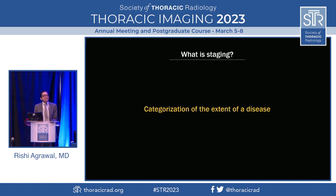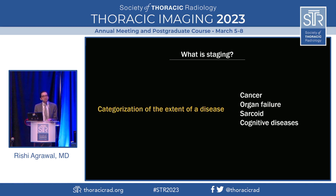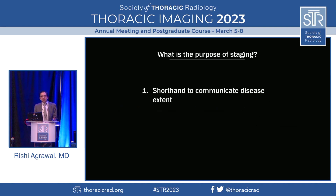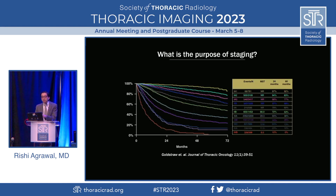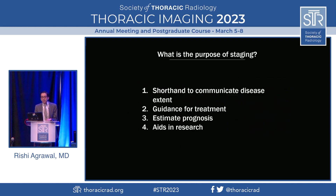Staging is a way to categorize the extent of disease. Probably the best known example is cancer, but there are staging systems for many other disease processes. The most important purpose for radiologists is that it's a shorthand way to communicate disease extent, helping us speak the same language as referring clinicians. Second, it guides treatment — it doesn't tell us everything, like cancer genetics, but it's a good starting point for whether surgery is indicated. Third, it estimates prognosis: survival curves for lung cancer show decreased survival with increased stage. Finally, it aids in research.